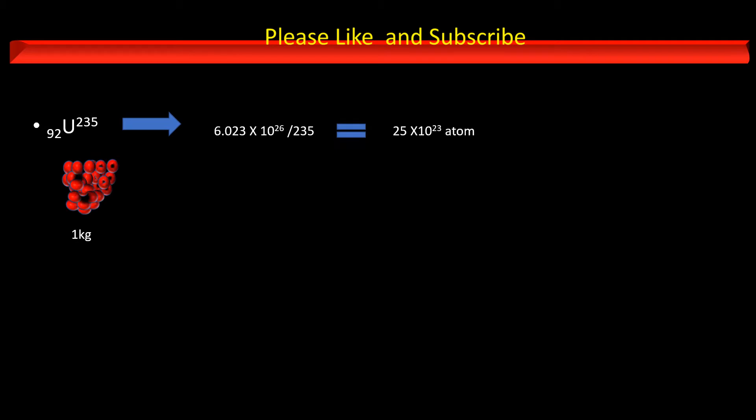Consider 1 kg of uranium 235, which contains 6.023 × 10^26 divided by 235 atoms, or about 25 × 10^23 atoms.